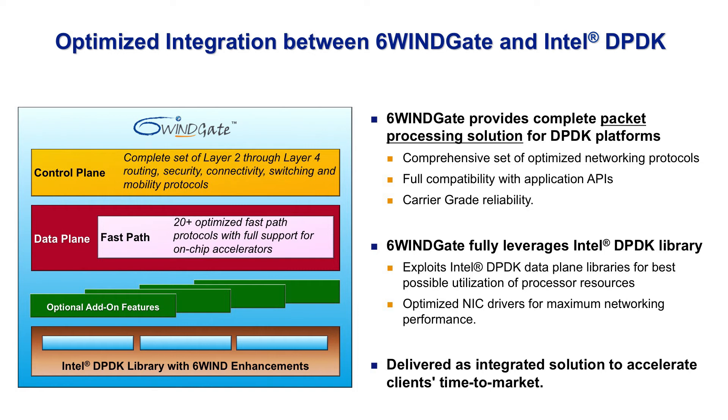By providing DPDK pre-integrated within 6Wind Gate, 6Wind minimizes customers' development time and helps to reduce their overall schedule risk. Intel's DPDK has been designed for Intel Ethernet controllers and Intel crypto solutions like the Cave Creek. 6Wind extends the DPDK for non-Intel Ethernet controllers, such as Mellanox 40G controllers, and supports crypto devices from Cavium, like the Nitrox 3, which are available only through 6Wind.